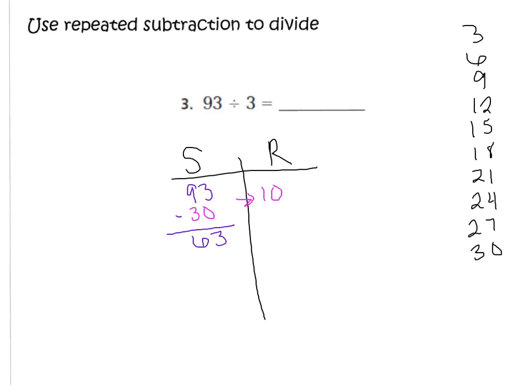I am not close to 0 yet. I can still subtract groups of 3. So I'm going to subtract my highest multiple again — 30. 63 minus 30: that is another group of 10. 3 minus 0 is 3, and 6 minus 3 is 3, giving me 33. I can still subtract another group of 30. Minus 30 — that is 10 more groups of 3. 3 minus 0 is 3, and 3 minus 3 is 0, giving me 3.